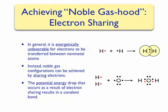We can draw shaded circles again to show that oxygen is now surrounded by eight valence electrons, giving it a noble gas configuration, while each hydrogen is surrounded by two electrons, giving both of them the same electron configuration as helium.